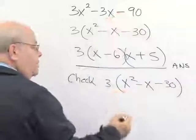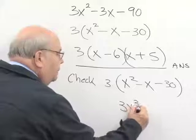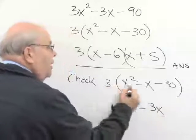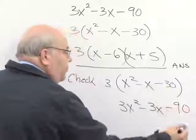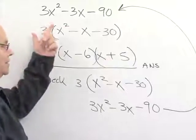We should end up with this same expression. Let's see, 3 times x squared is 3x squared, 3 times minus x is minus 3x, 3 times negative 30 is negative 90. Does that match exactly what our original problem? Yes, it does.